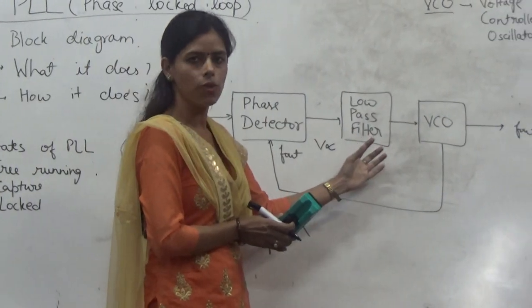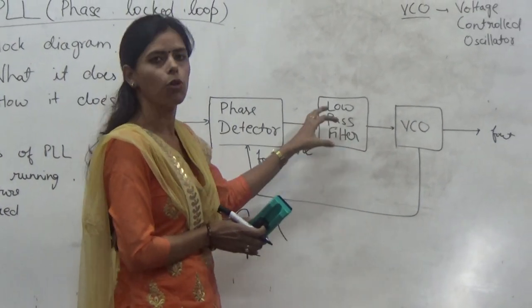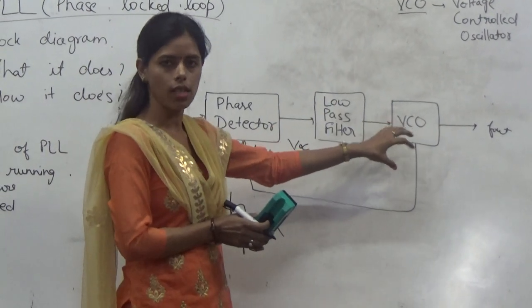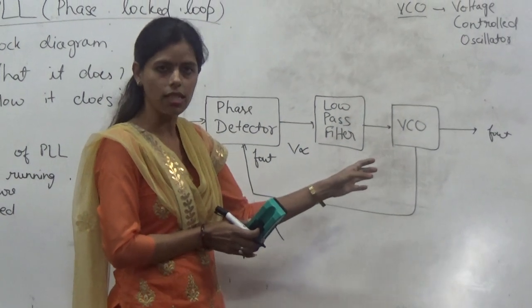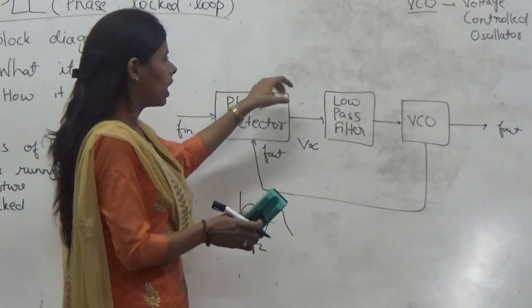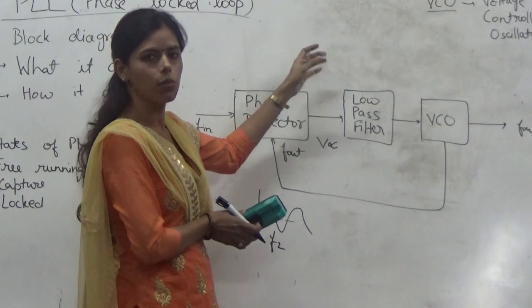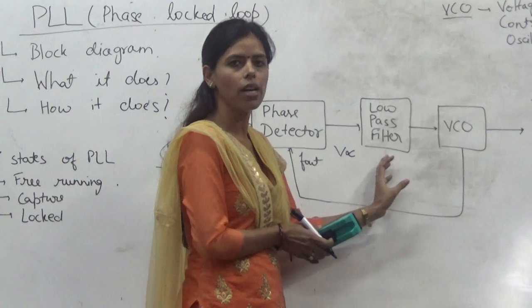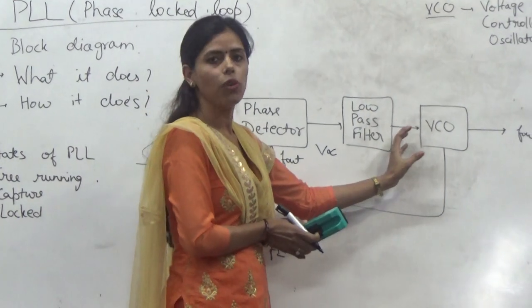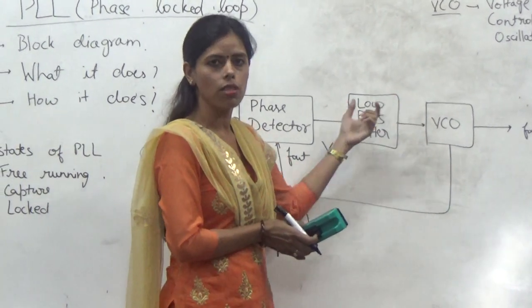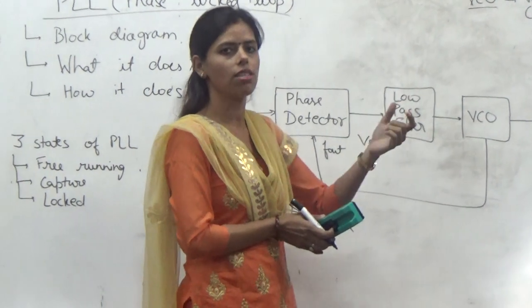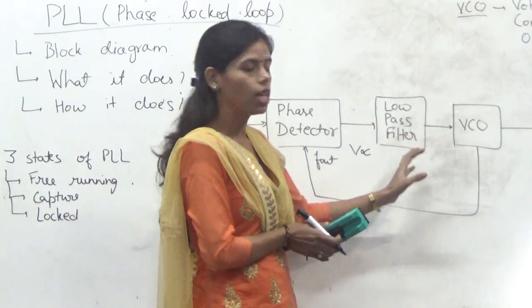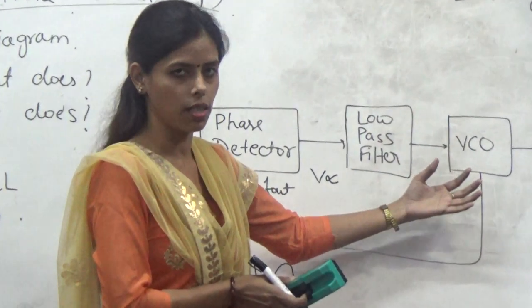The next block is the low pass filter. This low pass filter does nothing but pass the low frequency signal and remove the high frequency content of that signal. If we give a signal that contains a different range of frequencies and pass that signal to the low pass filter, the output will contain only the lower frequency portion of the signal. The higher frequency part will be removed.